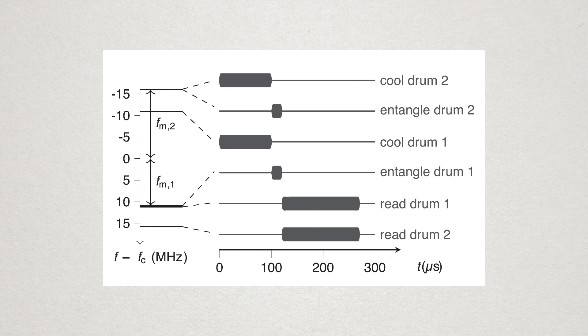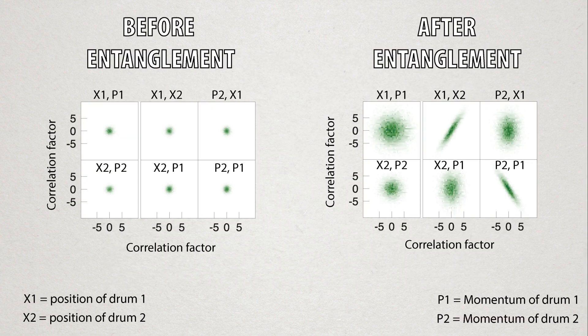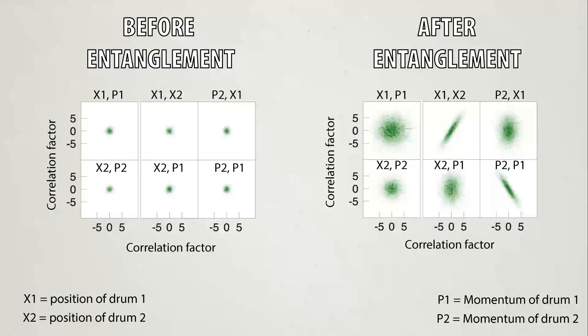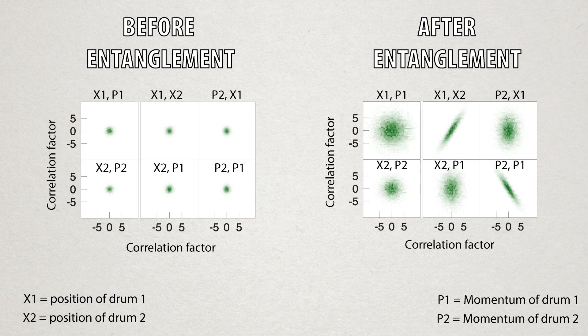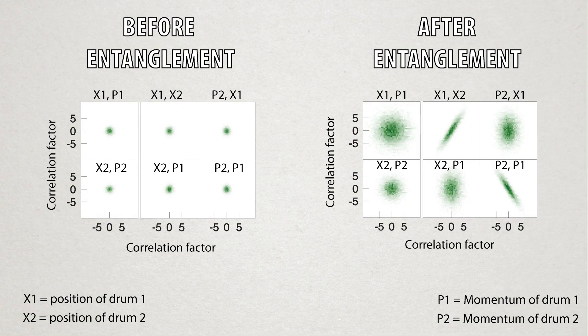In order to prove that the two drums were indeed entangled, they need to perform measurements called entanglement witness. This is where they effectively measure the correlation between the drum's position and momentum. If the correlations were stronger than a certain threshold, then we can say with some certainty that the objects were indeed entangled rather than just classically correlated.